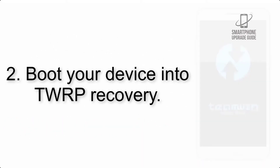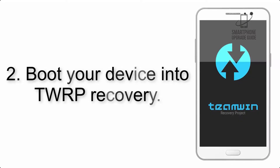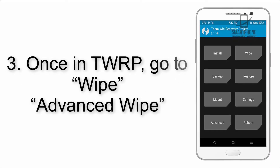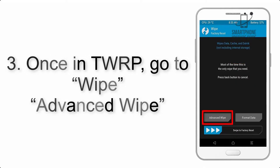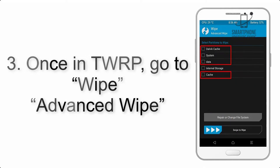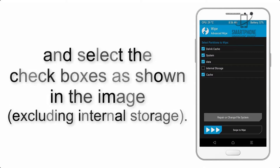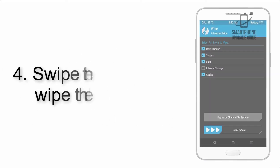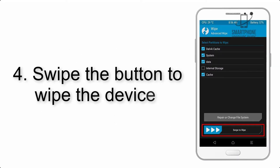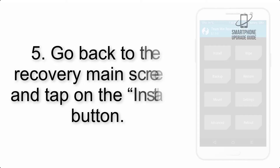Step 2: Boot your device into TWRP recovery. Once in TWRP, click on Wipe, then Advanced Wipe, and select the checkboxes as shown in the image, excluding internal storage. Step 4: Swipe the button to wipe the device.